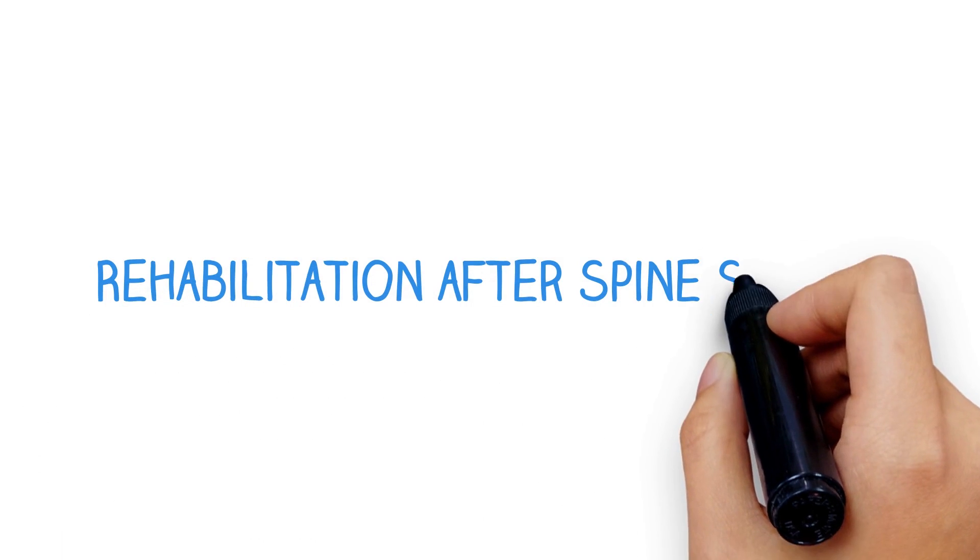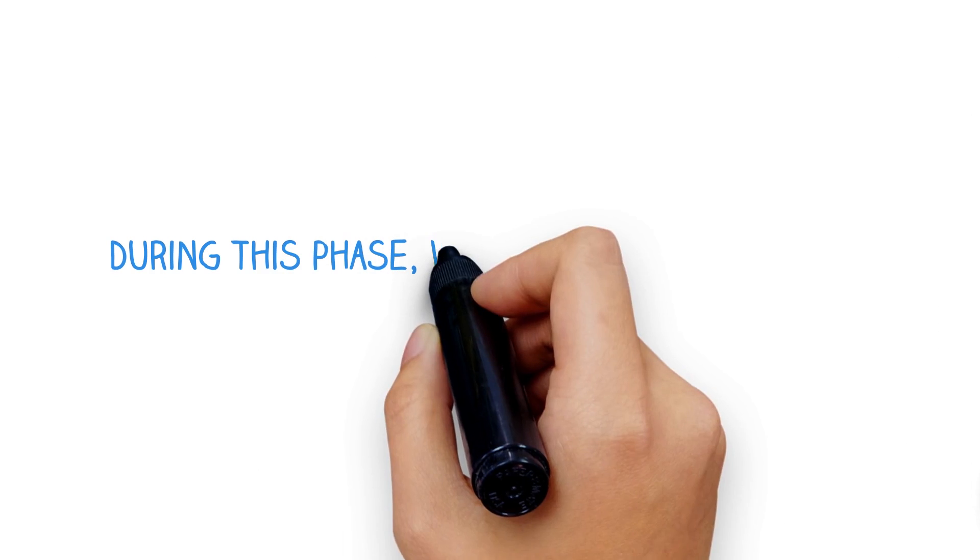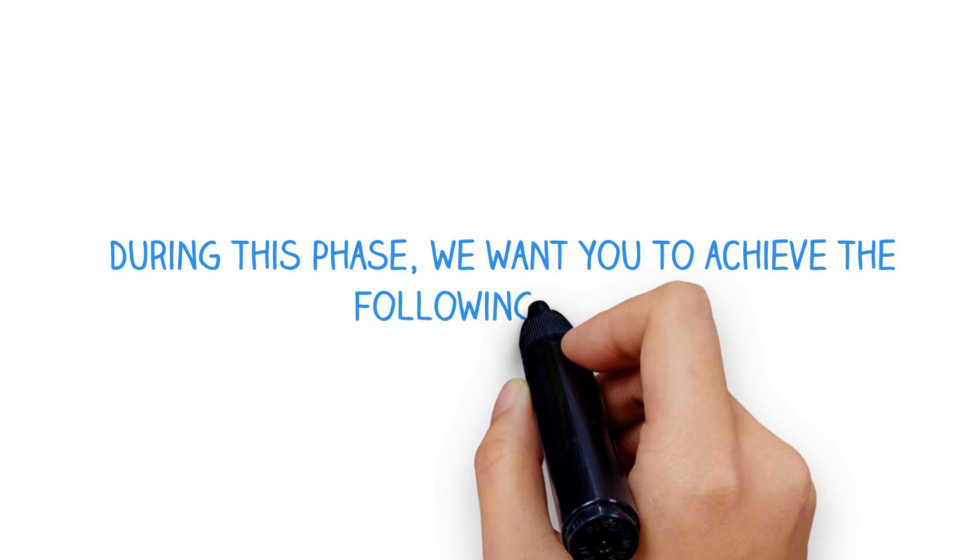Rehabilitation after spine surgery. The first phase of rehabilitation after spine surgery takes about three to five days for most people. During this phase, we want you to achieve the following goals.